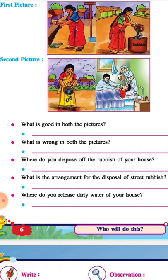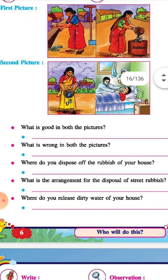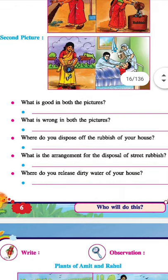Now in the second picture, the lady is throwing garbage outside. Because of that, her family member — her son — fell ill and was hospitalized. So what is good in both the pictures? That lady throwing garbage in the dustbin is doing the right thing. What is wrong? Throwing the garbage outside.